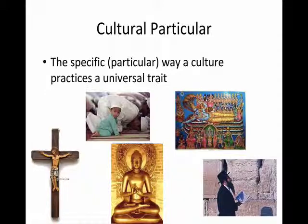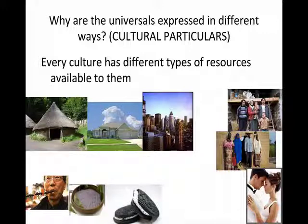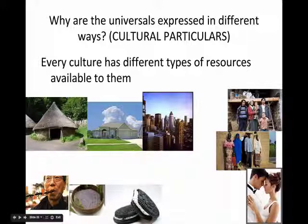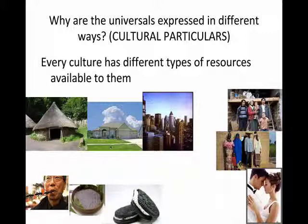Why do cultural particulars exist? Why are universals expressed in different ways? Why doesn't everybody live in a condo in a city? Why doesn't everyone eat steak for dinner? That's because every culture has different resources available to them. If you live in the middle of Africa, you don't have access to concrete or steel — you have mud, sticks, and wood, so your house looks like a hut. In a city without much space, you have a condo because you lack the resource of land. In the United States most people have a large yard and land, so they have a large house. The difference comes down to the resources available to you.